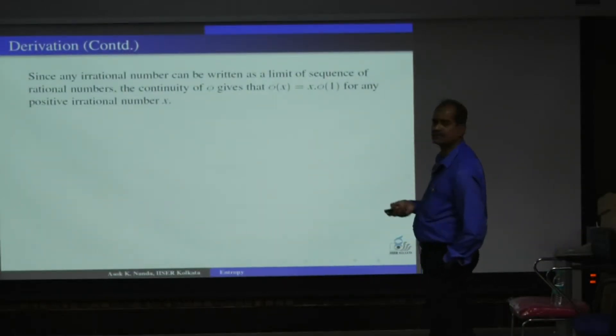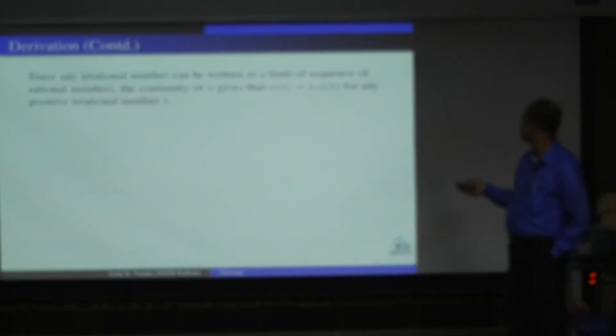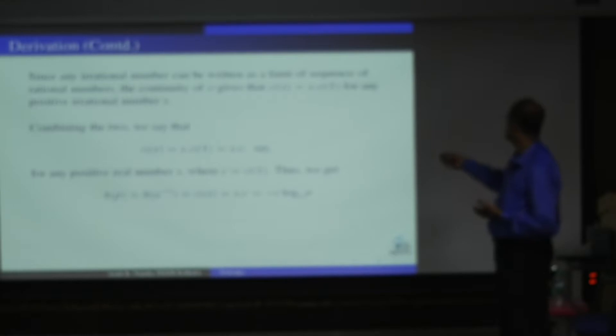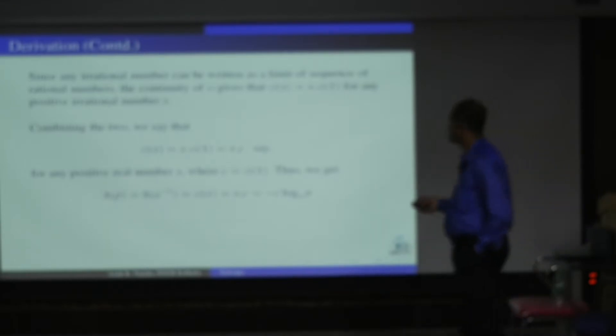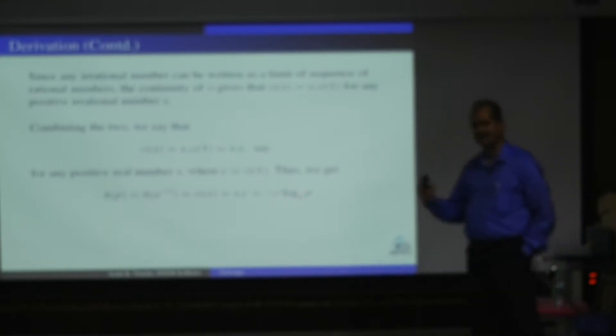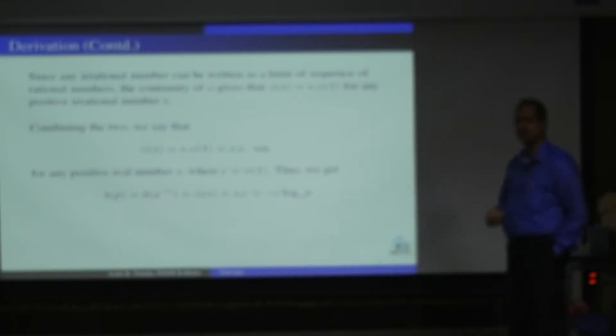Now, since we know that the real number set is dense, so I can take any sequence converging. You take any real number, so I can always get one sequence of rational numbers converging to that particular real number. So with that particular thing, if I take any x, then eventually this x, then I can write phi(x) is x times phi(1) through this sequential argument. So then what we get is your phi(x) is coming out to be x times c, where c is my phi(1). So now I come back to H(P).